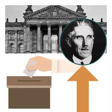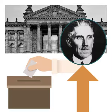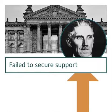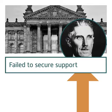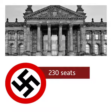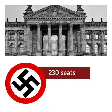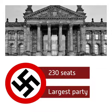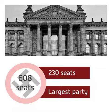In an attempt to gain support on the 4th of June 1932, he called a Reichstag election for July. In the July election, von Papen failed to secure support. However, the Nazi Party enjoyed great success, winning 230 seats and becoming the largest party in the Reichstag. However, they were far from a majority, as there were a total of 608 seats.